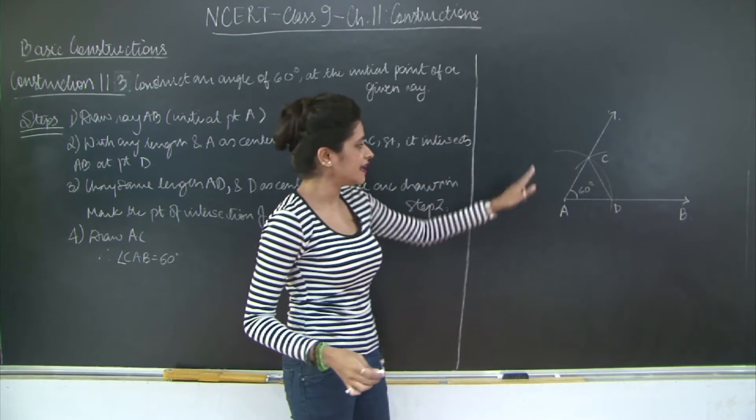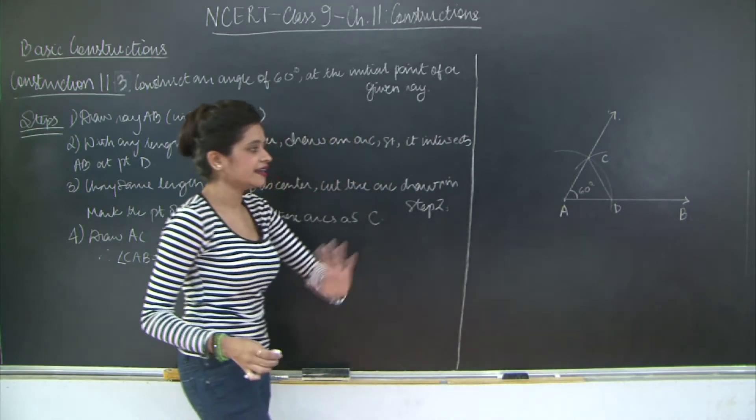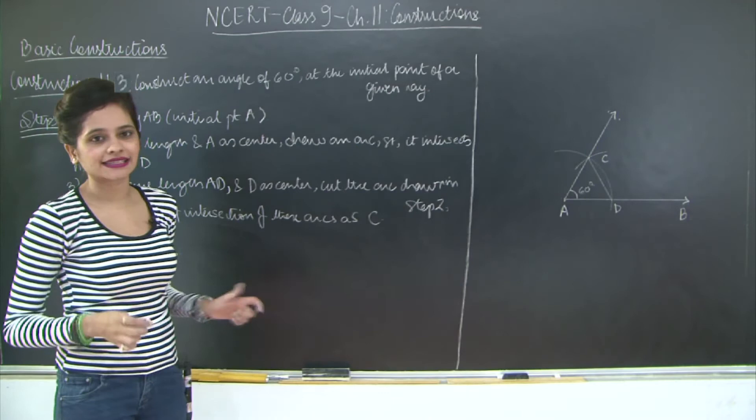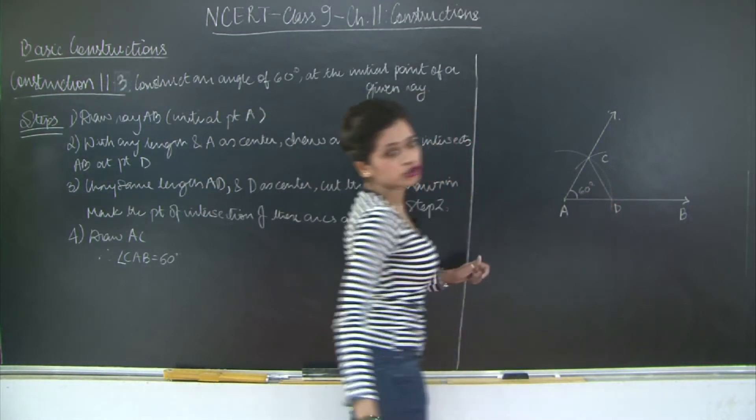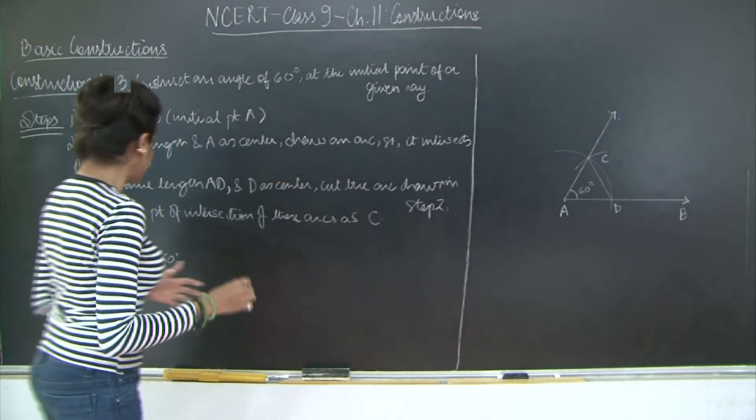Therefore this is an equilateral triangle. CAD is an equilateral triangle. What do we know for equilateral triangle? That each angle is 60 degrees. So not just angle A but angle C and angle D are also 60 degrees. Let's go ahead and write the proof.